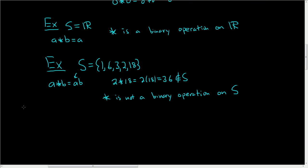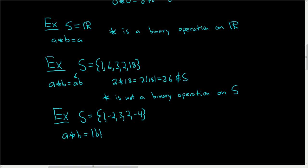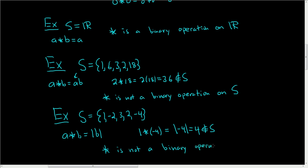Let's look at another example. We'll set S equal to the set containing 1, negative 2, 3, 2, and negative 4, and we'll define star as follows: a star b equals the absolute value of b. Again, the question is, is star a binary operation on S? It's not. If you take 1 and star it with negative 4, that equals the absolute value of negative 4, which is 4. And 4 is not in S, so star is not a binary operation on S. I hope this video has helped.